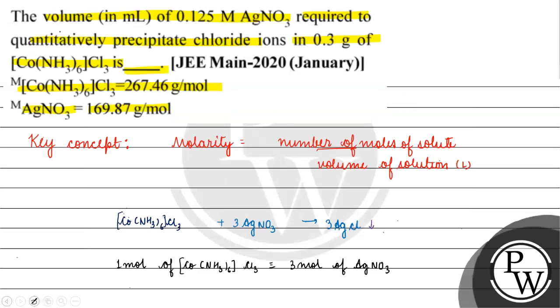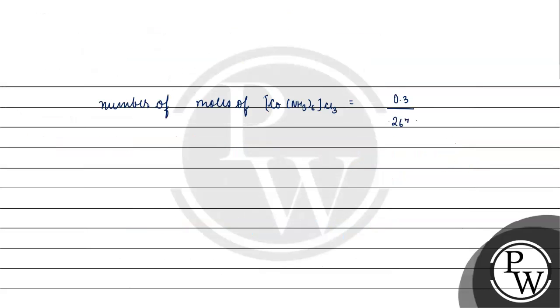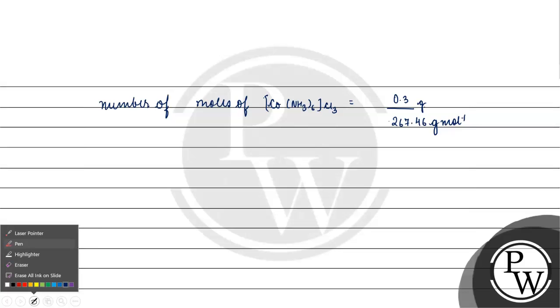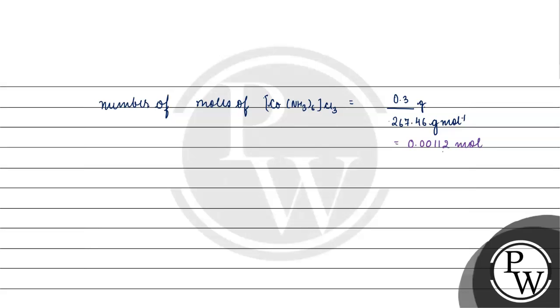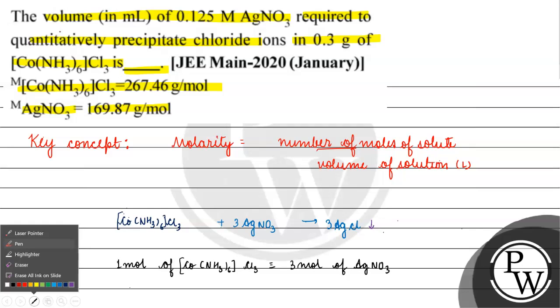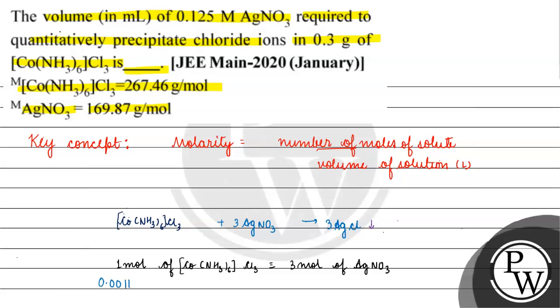Toh agar humein diya hai 0.3 gram of cobalt ke complex, toh uski number of moles nikaal lete hain. Kya hoga? Number of moles of the complex is basically equals to mass which is 0.3 by molar mass - jo kitna diya hai, humein diya hai 267.46 gram per mole. Yeah, toh humein kya hai? Yeh hamaari value kitni hai ki yeh basically aa jayegi 0.00112 moles.